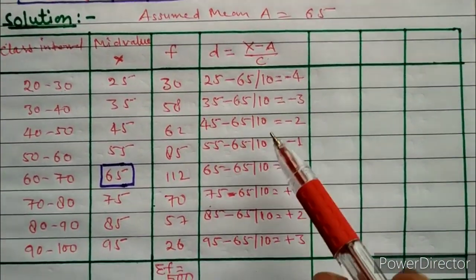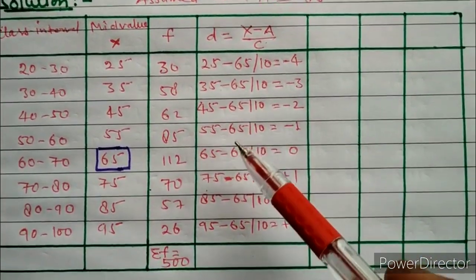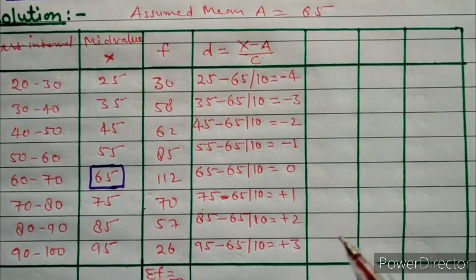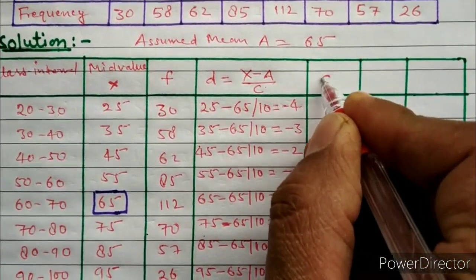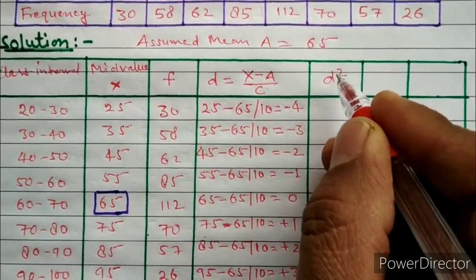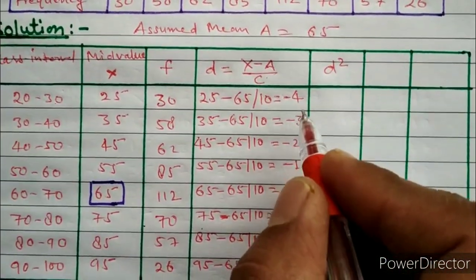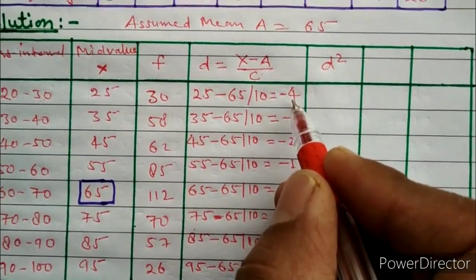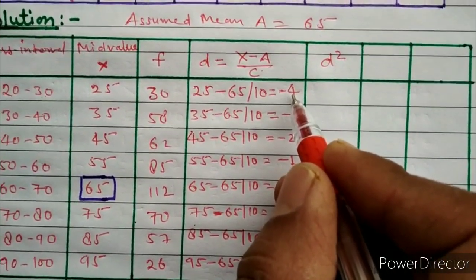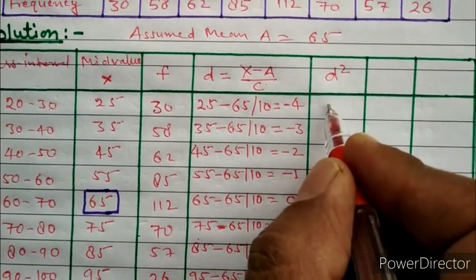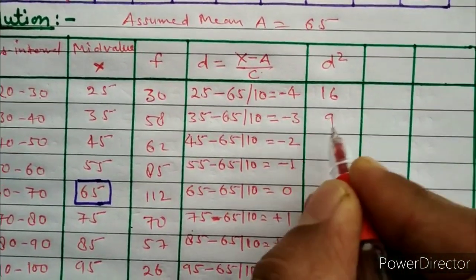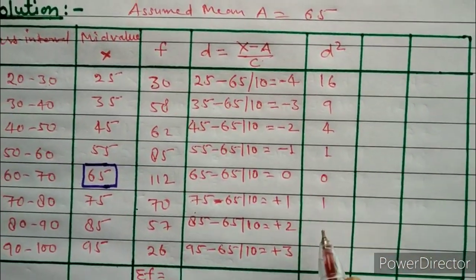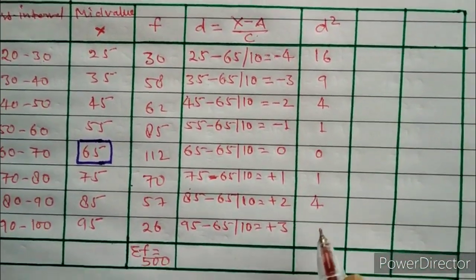In the next column we calculate d². We simply multiply d by itself. So 4 squared is 16, 3 squared is 9, 2 squared is 4, 1 squared is 1, 0 squared is 0, then 1 squared is 1, 2 squared is 4, and 3 squared is 9.